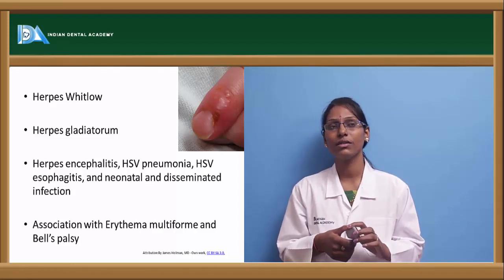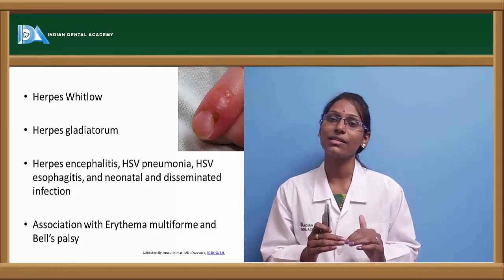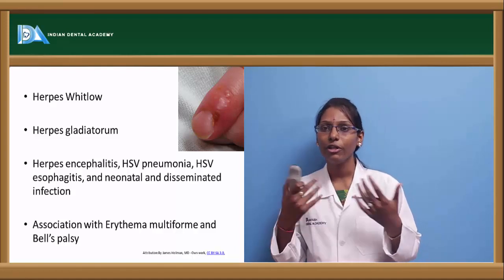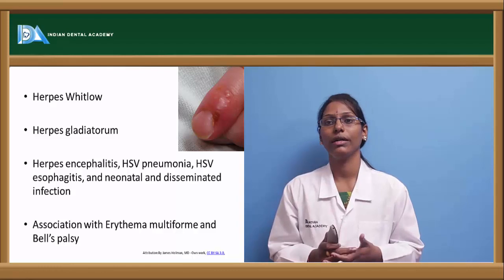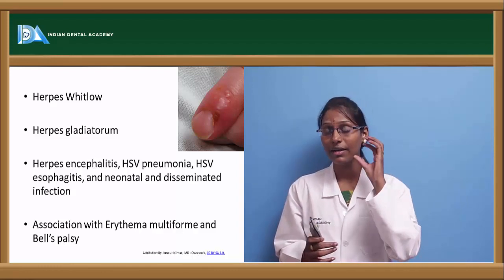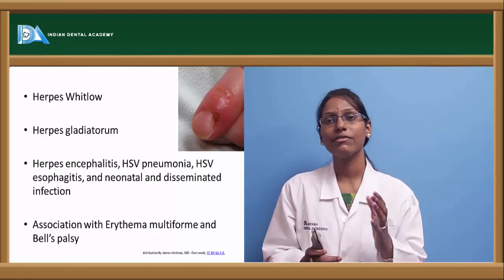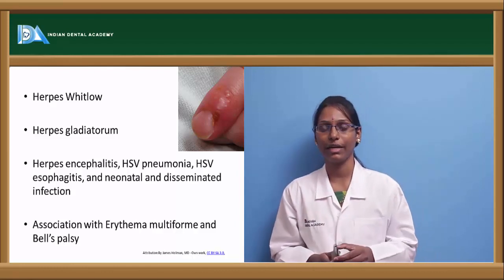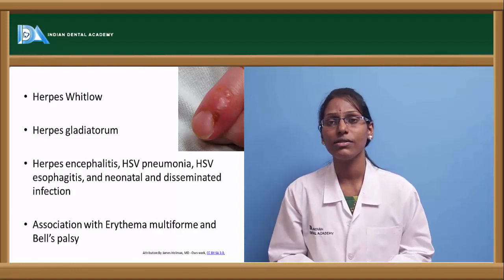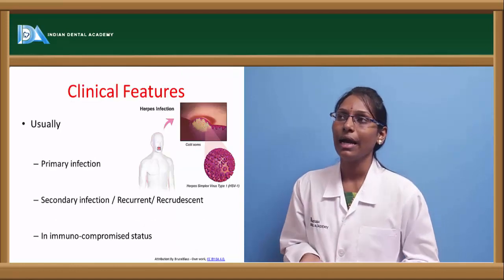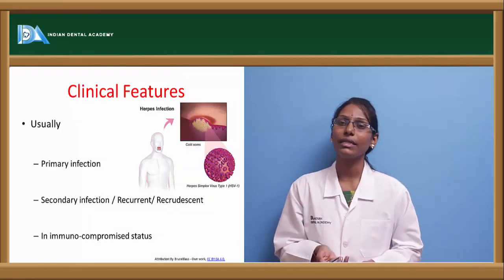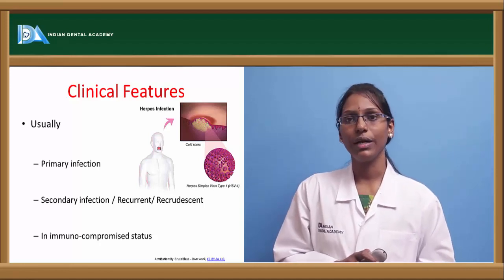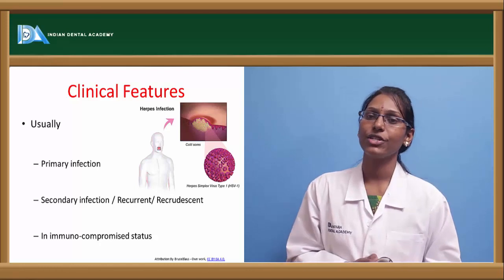During neonatal infection, as the immunity is not well developed, they may have very severe or full-blown HSV vesicles. In case of eczema, HSV along with eczema results in a more severe form of infection. HSV is also associated with erythema multiforme, and in Bell's palsy, about 30% of Bell's palsy cases have an etiopathogenesis related to HSV infection.